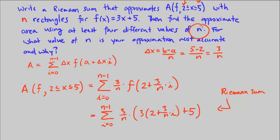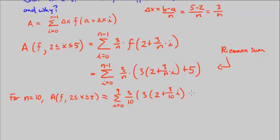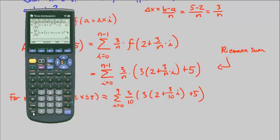Let's go ahead and use four different values of n. You can use any number of n. For n equals 10, our area between f and our x-axis between 2 and 5 is approximately: for n is 10, we know we're going from i equals 0 to 9, n minus 1, 3/10 times 3 times (2 + 3/10 × i) + 5. Let's go ahead and calculate that in our calculator.